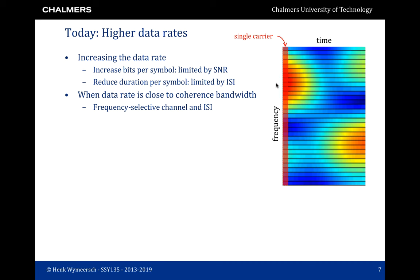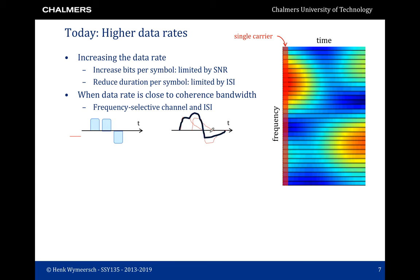This is shown on the right-hand side. Suppose that the channel behaves over time and frequency as shown in the color plot, and we use a single carrier system with a very large bandwidth, shown with the red box. Then we see that different parts of this bandwidth will see a different channel — the channel is frequency selective, which in the time domain leads to ISI. We see that when we transmit a sequence of pulses over this channel, at the receiver side these pulses will be blurred together. This is inter-symbol interference.